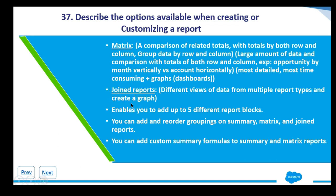The fourth format is joint reports, which pull from multiple objects. In tabular, matrix, and summary reports, data comes from a single object — for example, a contacts report only shows contacts. However, in joint reports you can pull from other report types such as opportunities, leads, and more, all on the same page. You can have up to five different report blocks in a joint report, and you can add and reorder groupings on summary, matrix, and joint reports.